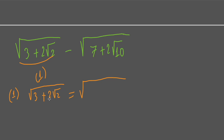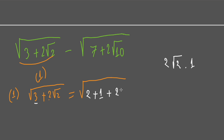Notice that this involves 2 and another term with square root of 2, and the other part has no coefficient, so you can assume that is 1. Then 3 equals 2 plus 1, and 2 square root of 2 equals 2 times square root of 2 times 1. So you can separate 3 into 2 plus 1 plus 2 square root of 2.